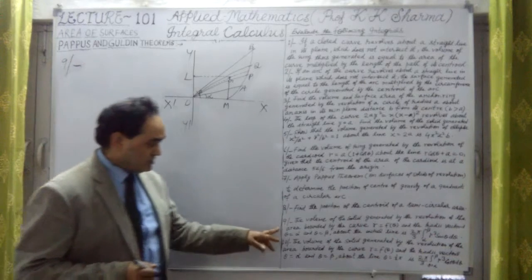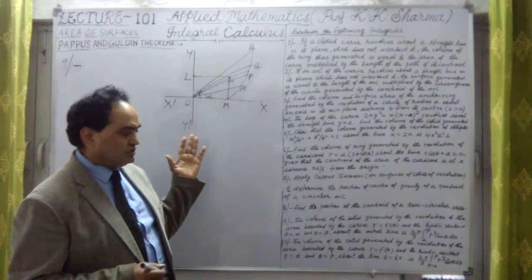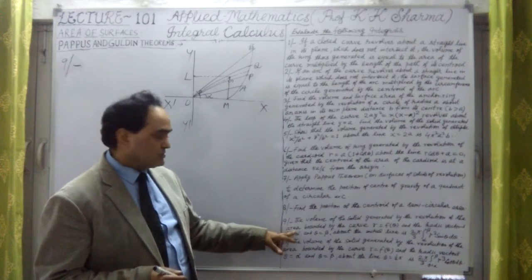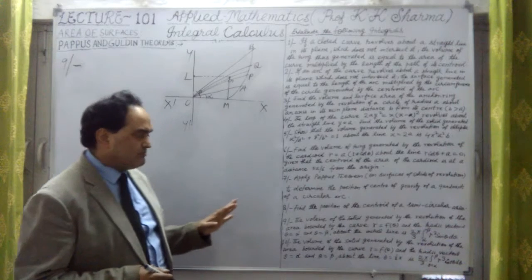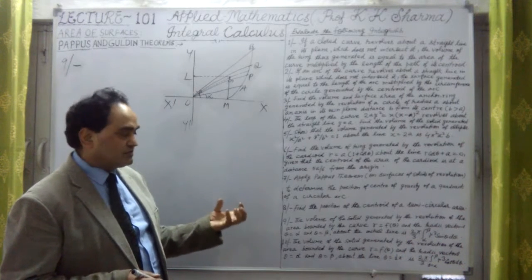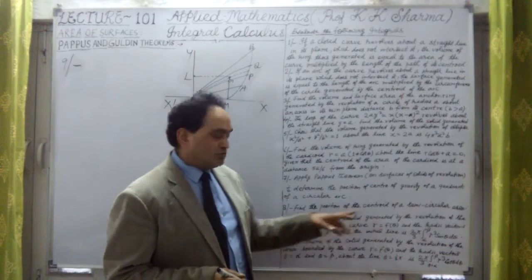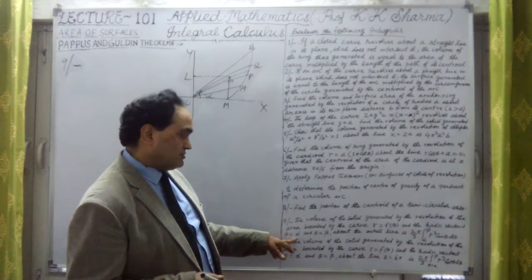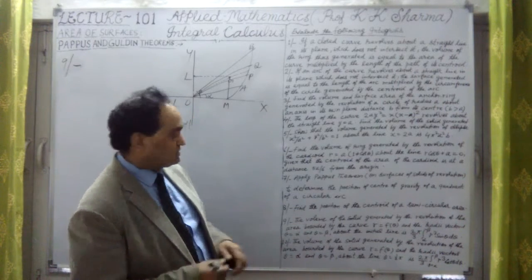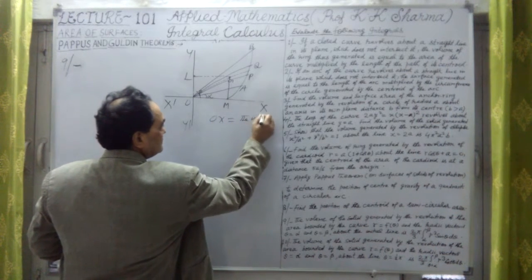We have question number 9 here. We will solve it with the help of Pappus and Guldinus theorem. Given: the volume of the solid generated by the revolution of the area bounded by the curve r = f(θ), which is the polar form of the equation. We need the volume of revolution between the radii vectors θ = α and θ = β about the initial line OX.